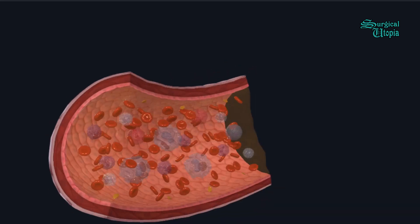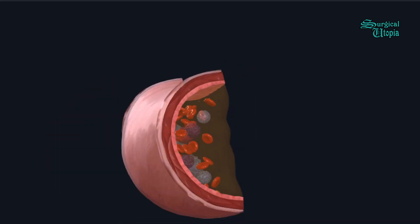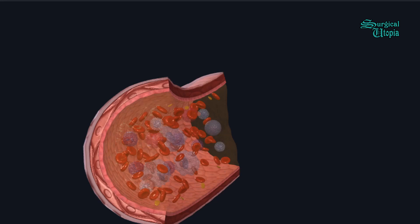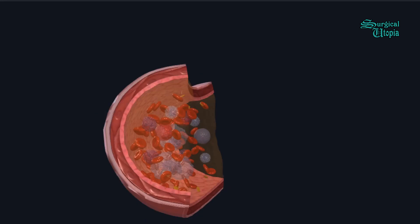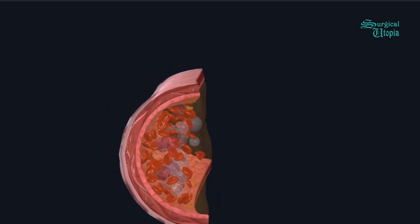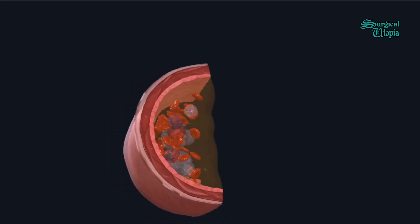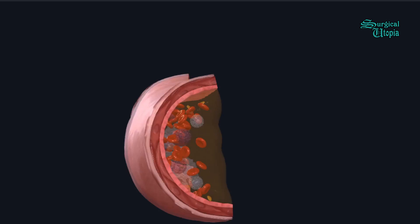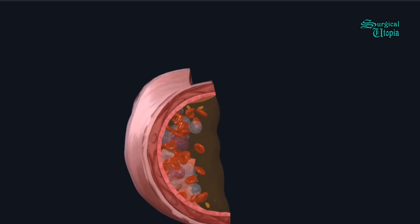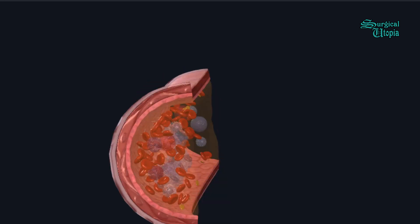Welcome back to Surgical Utopia. Today we will be discussing the blood. What you see here is a cross-section of a blood vessel, and we will first see the layers of a blood vessel — this is an artery.